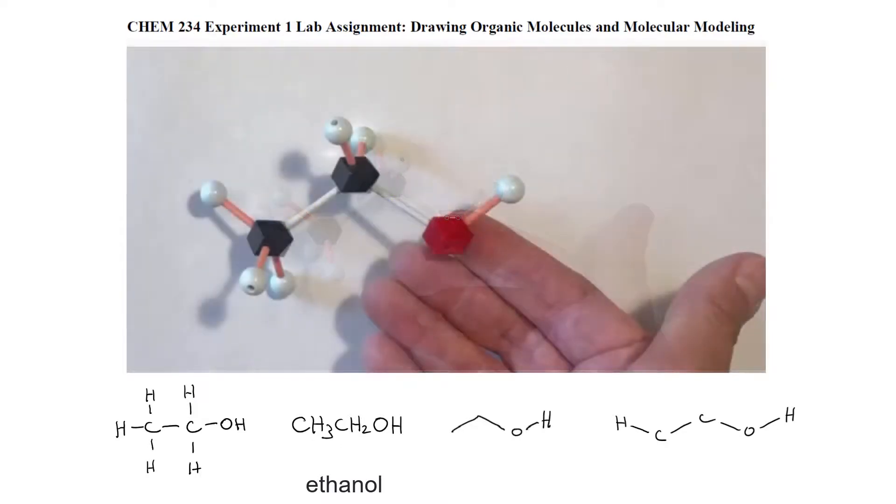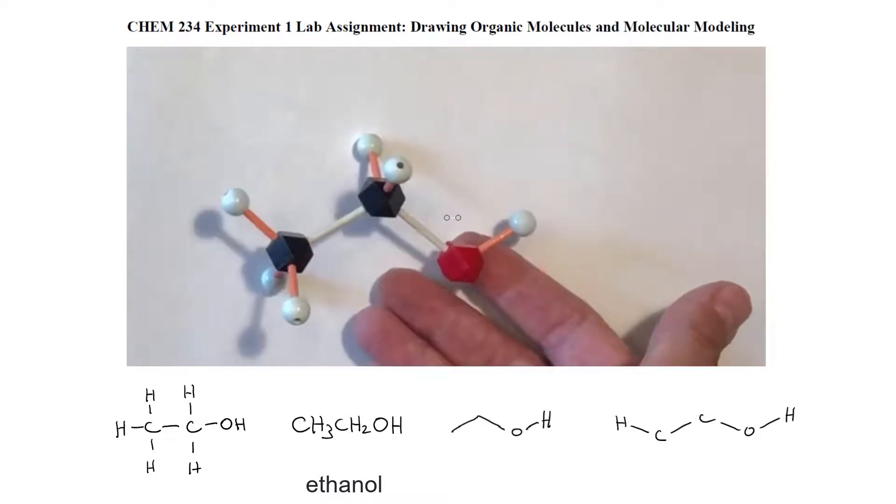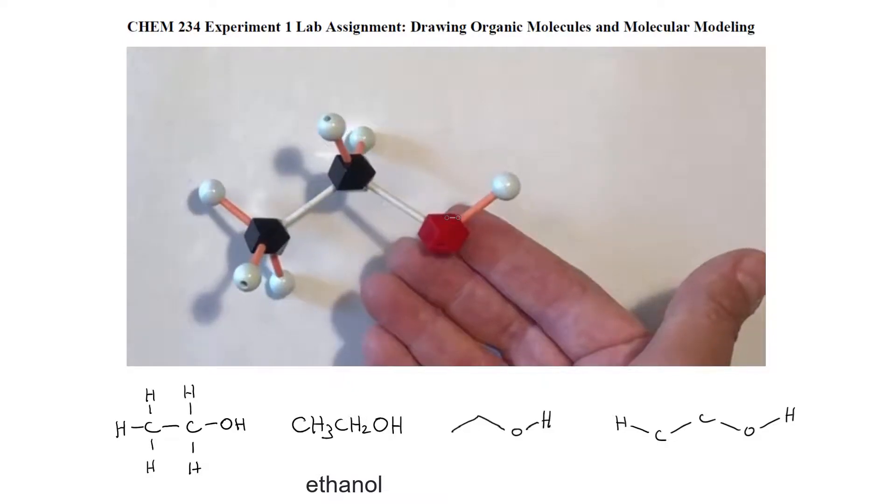Now we need to identify which hydrogen atoms are pointing out of the plane and are closer to your eye, and which are further away from your eye and pointing into the plane. I'm going to jiggle the structure gently, which will make it easier to see these. I'm highlighting the hydrogen atoms that are closer to your eye in purple. These will get represented with a wedged bond. The wedge needs to start small at the carbon atom and get larger as it approaches the hydrogen. This is to give a sense of perspective. The bond almost seems to get bigger as it gets closer to your eye.